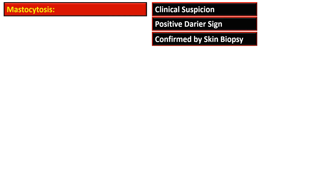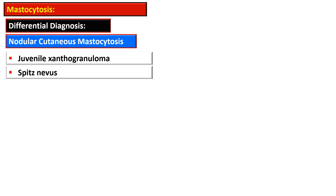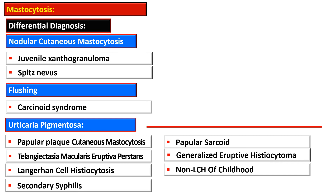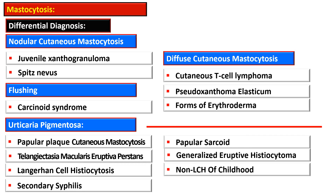The diagnostic clues are clinical suspicion, positive Darier sign, and skin biopsy. Nodular cutaneous mastocytosis should be differentiated from juvenile xanthogranuloma and Spitz nevus. Flushing in mastocytosis should be differentiated from carcinoid syndrome. Urticaria pigmentosa should be differentiated from papular-plaque cutaneous mastocytosis, telangiectasia macularis eruptiva perstans, Langerhans cell histiocytosis, secondary syphilis, papular sarcoid, generalized eruptive histiocytoma, and non-Langerhans cell histiocytosis of childhood. Diffuse cutaneous mastocytosis differentials include cutaneous T-cell lymphoma, pseudoxanthoma elasticum, and forms of erythroderma.